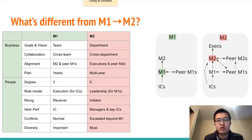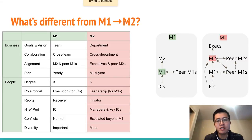An M1 needs to set a role model for her individual members regarding execution, but an M2 needs to set a role model for her reporting managers regarding leadership. An M1 is a receiver of a reorg, but an M2 can initiate reorgs across multiple teams.